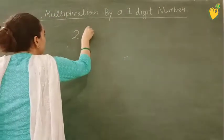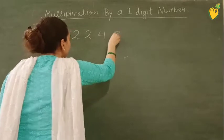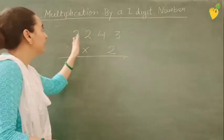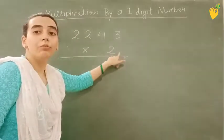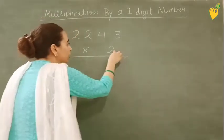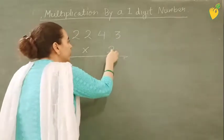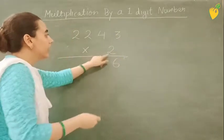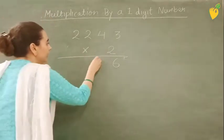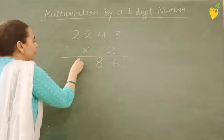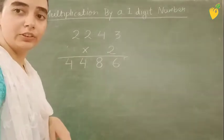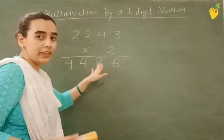2243 multiplied by 2. As you can see here we are multiplying with one digit number that is 2. So first thing we do here, 2 is multiplied by 3. 2 3's are 6. Now 2 will be multiplied by 4. 2 4's are 8. 2 2's are 4. 2 2's are 4. So here what have I got? 4486.